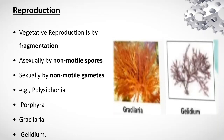Reproduction: vegetative reproduction is by fragmentation. Asexual reproduction occurs by non-motile spores, and sexual reproduction occurs by non-motile gametes — for example, in Polysiphonia.